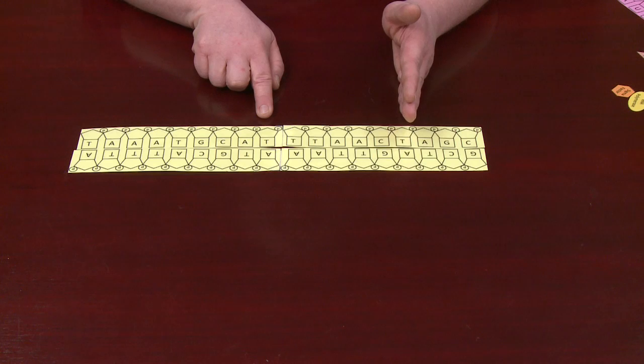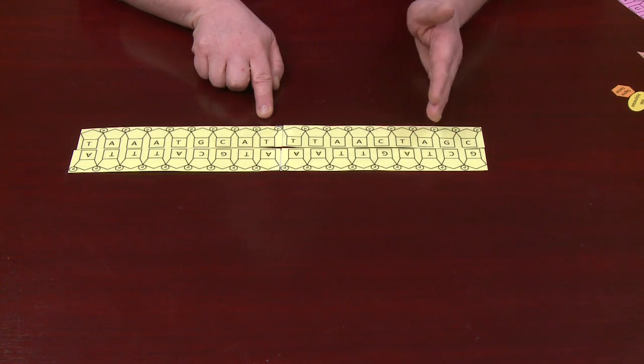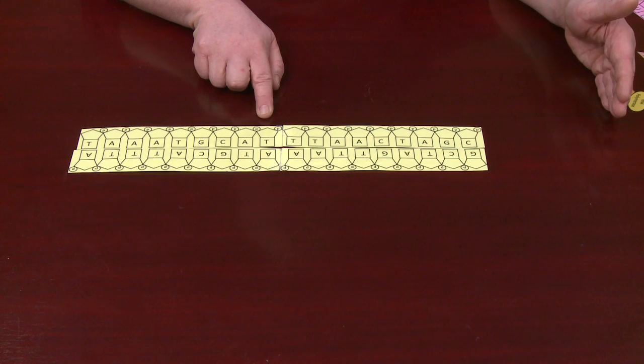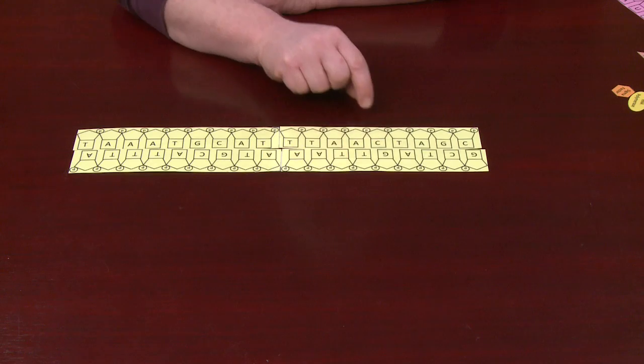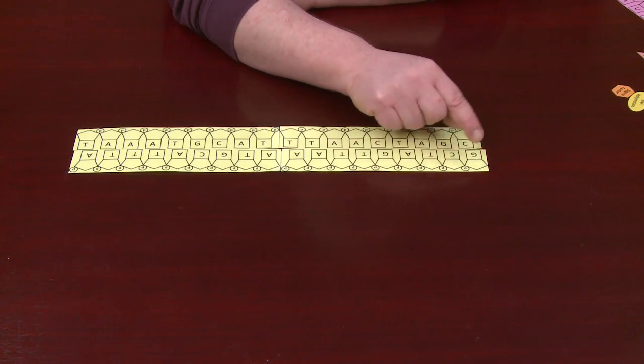6, 7, 9, 10 bases, and that's called the minus 10 region, and continue along up to minus 35. That's the minus 35 region. We're going to pretend the minus 10 region is here and the minus 35 region is here.